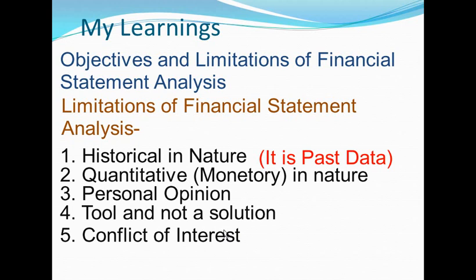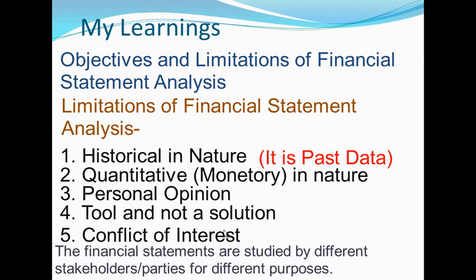5. Conflict of Interest. The financial statements are studied by different stakeholders or parties for different purposes. It may not meet the requirements of all the stakeholders as their interests are different. For example, shareholders would be interested in knowing the dividend-paying capacity of the business. Creditors would be interested in knowing the short-term liquidity position. Lenders like banks would be more interested in knowing the company's ability to pay interest and principal on time.